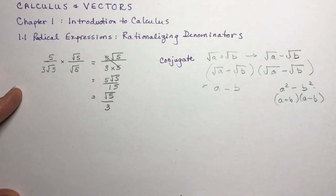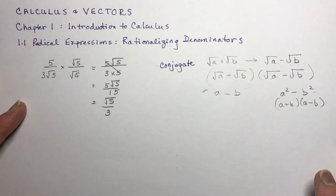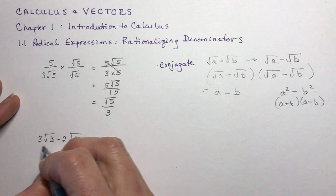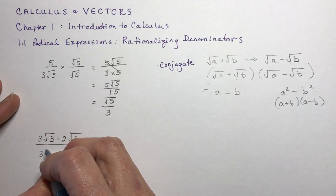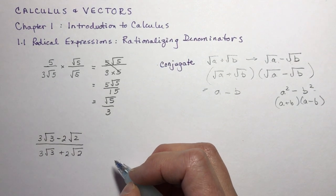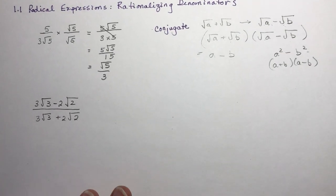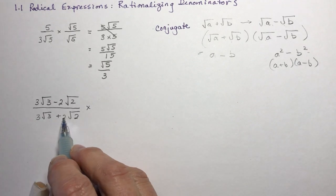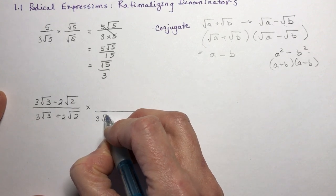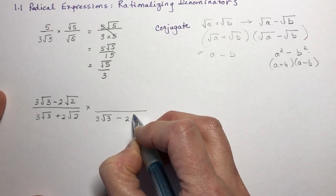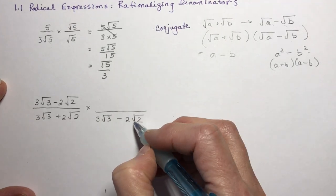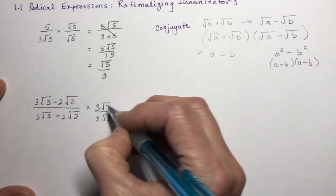So we usually call this rationalizing the denominator. So if I have something like 3 root 3 minus 2 root 2, written over 3 root 3 plus 2 root 2, and I want to rationalize the denominator — what is the conjugate of this? So 3 root 3 plus 2 root 2: I would multiply by the conjugate, which is 3 root 3 minus 2 root 2. You just write the same thing out and change the sign between them. So whatever you do to the denominator, you must do to the numerator.